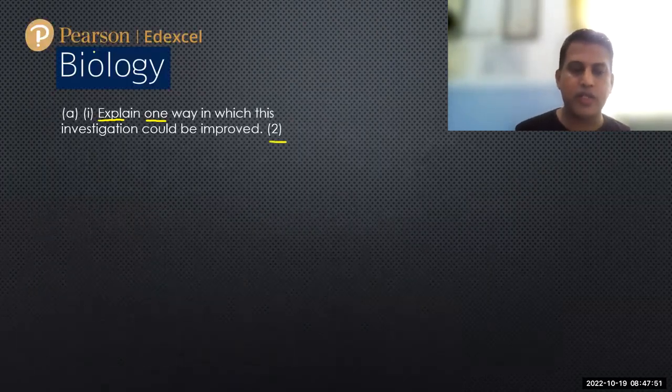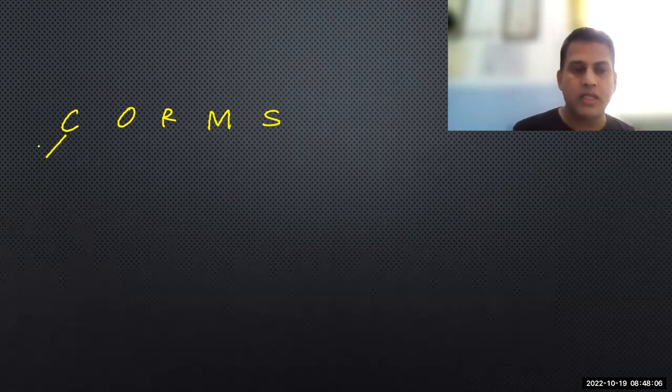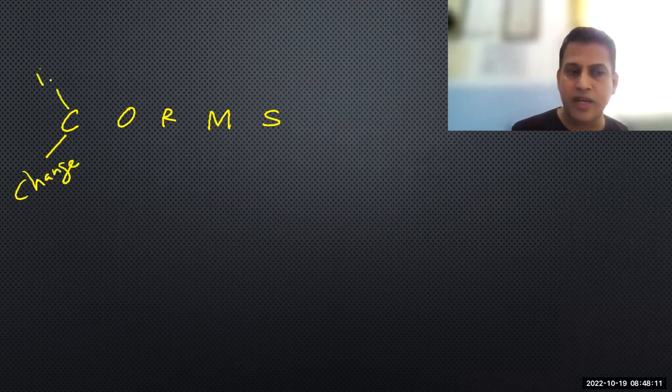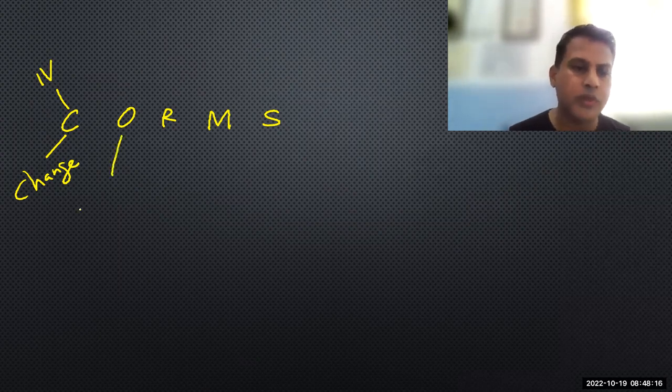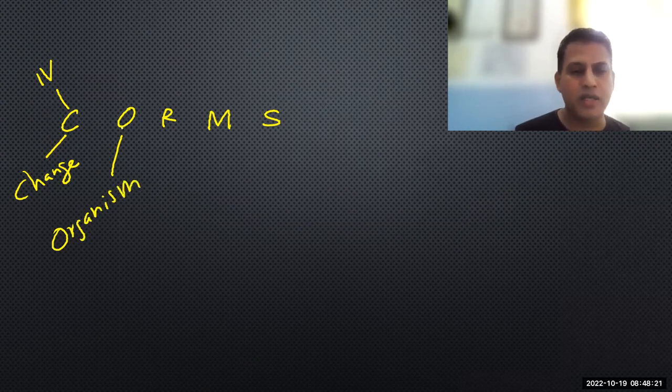For this question, I will show you a method that you can use always to improve the experiment. You can remember, in IGCSE we use this CORMS format. C stands for the change, that is the independent variable, what we change is the independent variable.